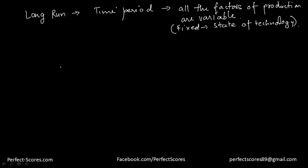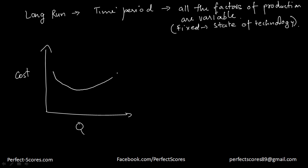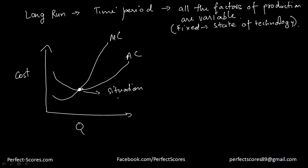Now, since we talked about the cost curve — this was our cost and this was our quantity — we found out that this was the lowest point of our average curve, and marginal cost was actually cutting the average cost at its lowest point. This is the situation that every firm wants to be in. Every firm wants to have the minimum cost, so they would produce this much quantity at the minimum cost.